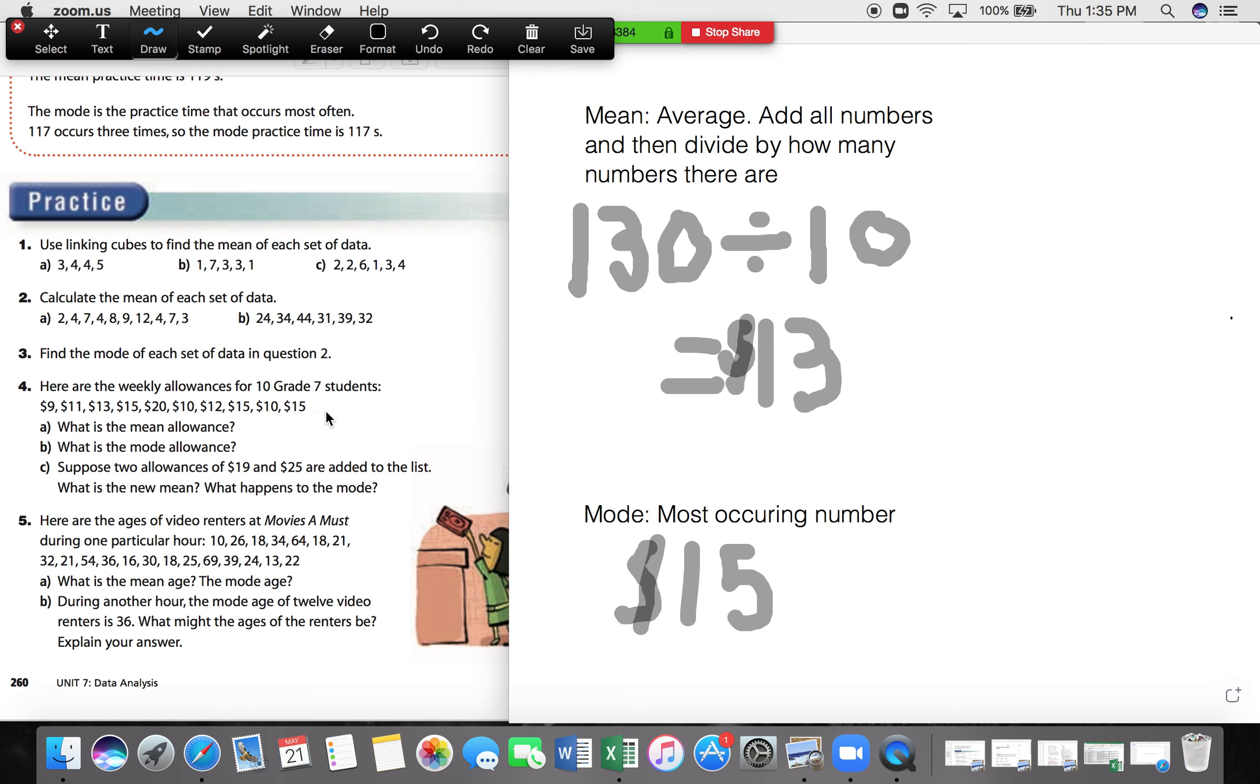So we draw a 19 here and a 19 here, and we draw on two 25s. We draw a 25 here and a 25 here. And then we do the same thing, calculating the new mean and calculating the new mode.